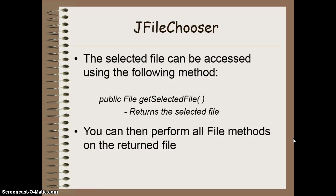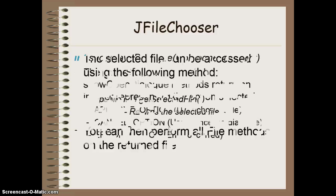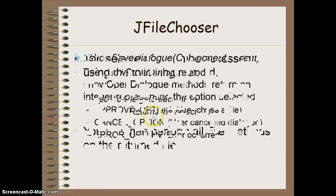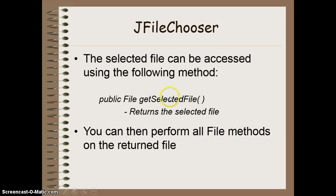Once you've been able to get an actual file selected — so they had the approve option selected — you're going to get access to the file by using the getSelectedFile method, and this is what's going to return the file object itself. Once you've saved that into a file object you can then perform any file method we've seen from a previous lesson. You can convert it into a scanner so you can access it, whatever it is that you need to do.